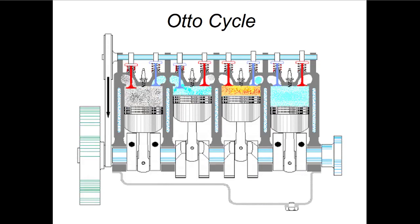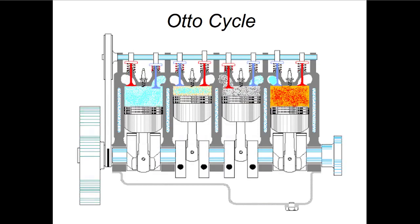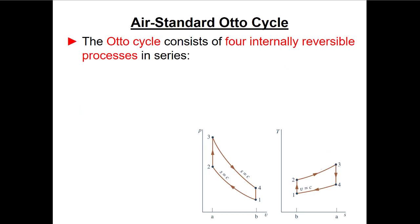Today we move from this general discussion to a specific discussion about the Otto cycle — a particular type of internal combustion engine cycle. The Otto cycle has four internally reversible processes in series. One key difference from a Rankine cycle is that in the Rankine cycle, different processes occur at different physical locations, but in this internal combustion engine, all four processes happen in the same piston-cylinder assembly. Instead of changing position, we're changing time — running a different process at different times to complete the full cycle.